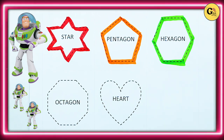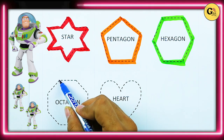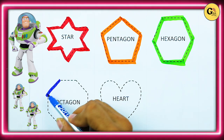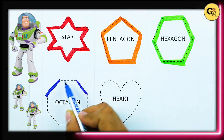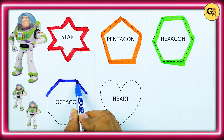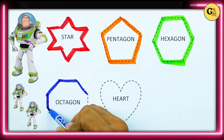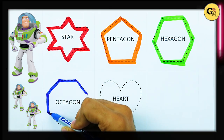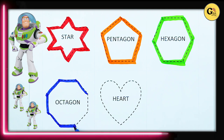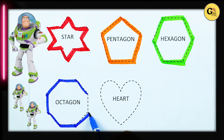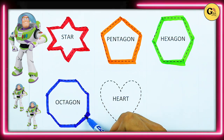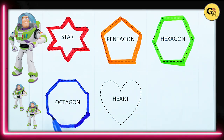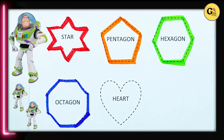Octagon. One line, two line, three line, four, five, six, seven, eight. Eight lines means octagon.